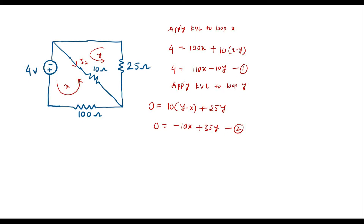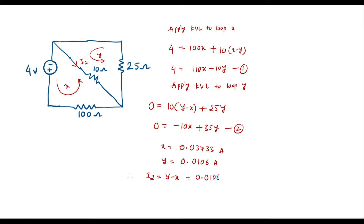Let me simplify these two equations using the calculator, keeping it in equation mode. We get X equals 0.03733 amp and Y equals 0.0106 amp. Therefore, I2 equals Y minus X, since I2 and Y are in the same direction. That is: I2 equals 0.0106 minus 0.03733, so I2 equals minus 0.02673 amp. This is the current considering the 4 volt source alone.